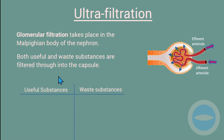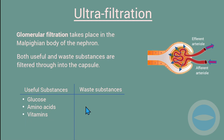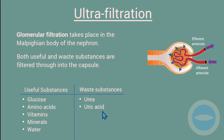Let's look at the useful and waste substances that pass through. Useful substances include glucose, which is a small compound able to pass through the layers; amino acids, which are the broken-down products of proteins; vitamins, which are also small substances; minerals; and water. The wasteful substances filtered through include urea and uric acid. These substances pass through due to the pressure formed by the afferent and efferent arterioles.